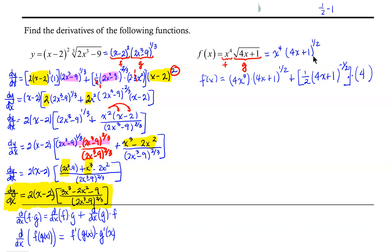The factor of 1/2 times 4 equals 2, so we simplify. f prime of x equals 4x cubed times 4x plus 1 to the 1/2 power, plus 2 times 4x plus 1 to the negative 1/2 power, which we rewrite without the negative exponent as 2 over 4x plus 1 to the 1/2 power.